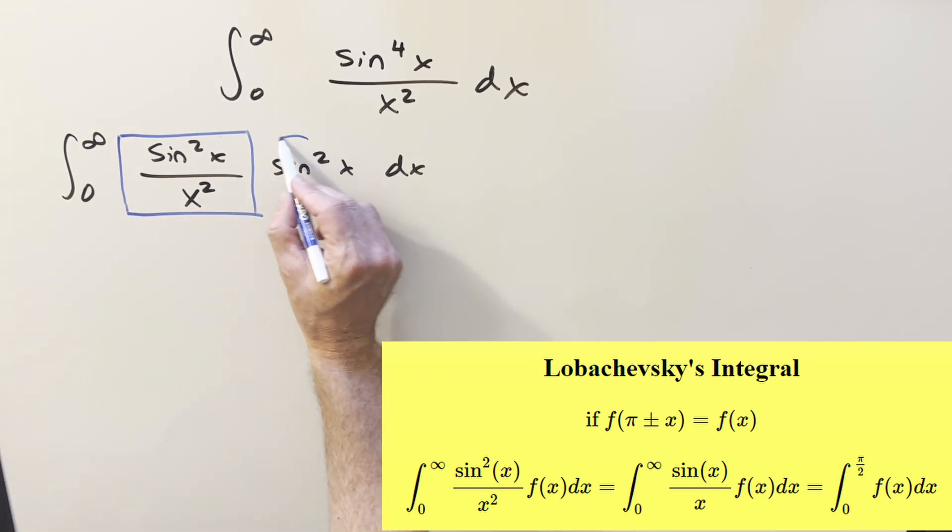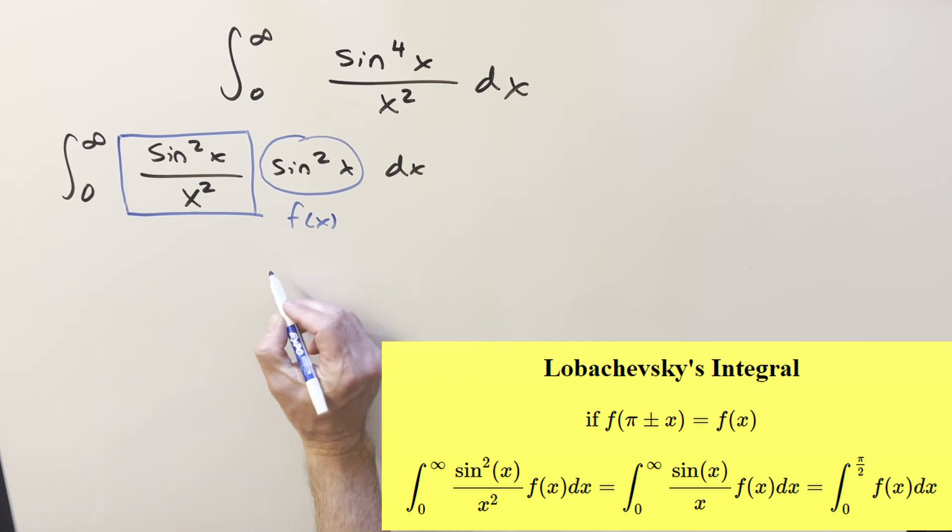It would work just as well if we had sine over x. And then the formula of this piece right here, this is just going to be our f of x value. And our requirement for this is just that it's even and pi periodic.